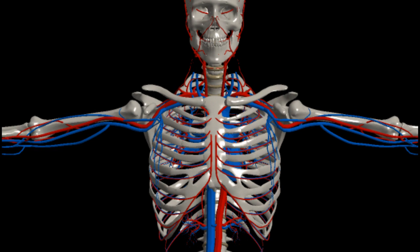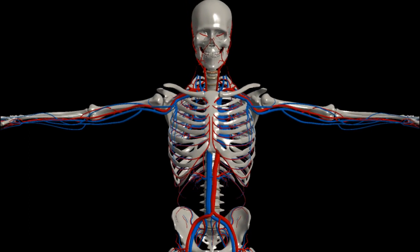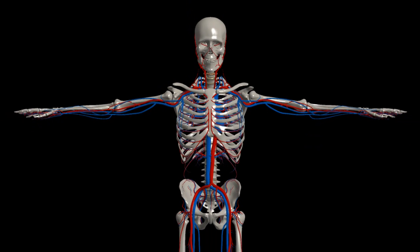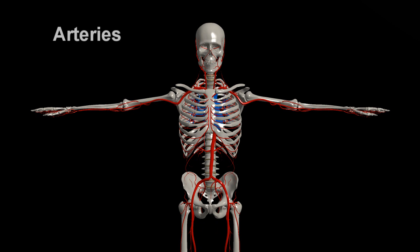Whenever we look at a graphic representation of the circulatory system, the vessels in the body are labeled blue and red. The red vessels are the arteries which are structurally optimized to carry the blood from the heart to the periphery of the body.